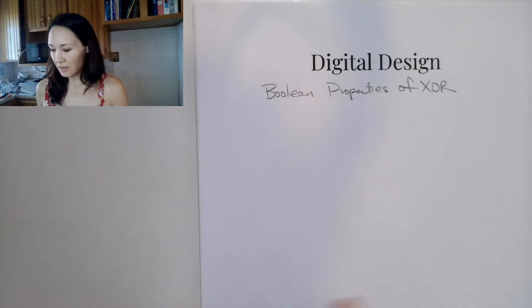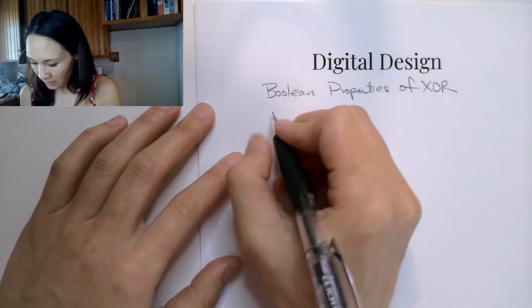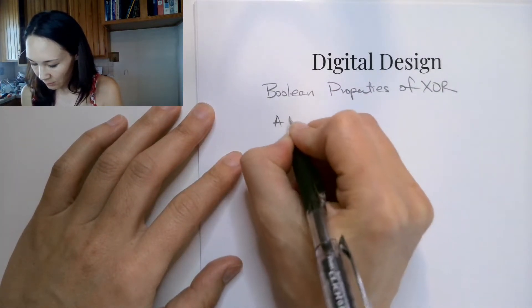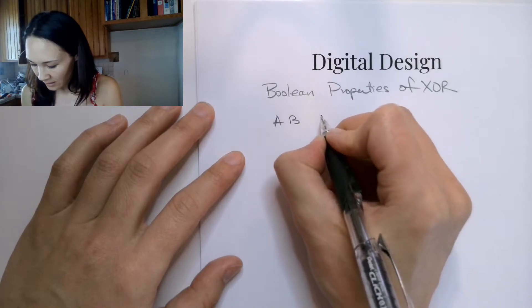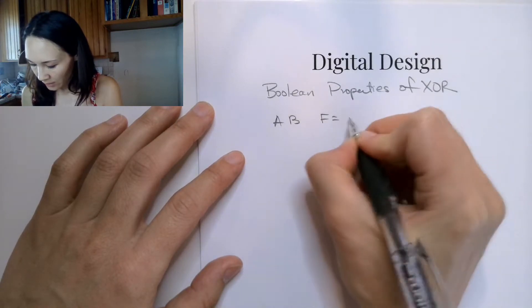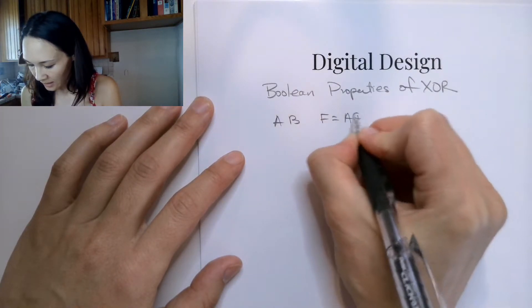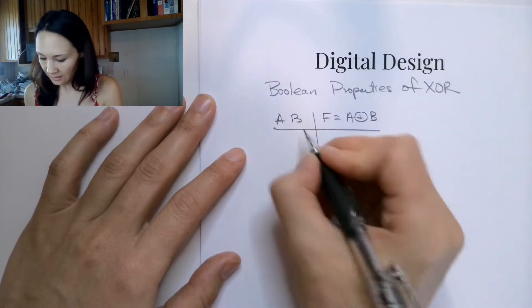So let's revisit the logical function of XOR. Just to recall, if we have inputs A and B, then if our output is A XOR B, then the truth table looks like this.